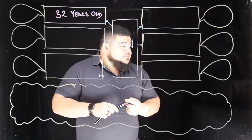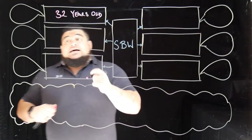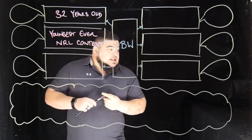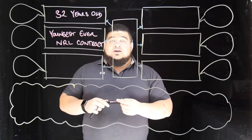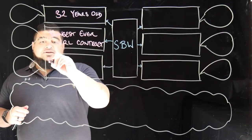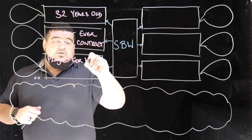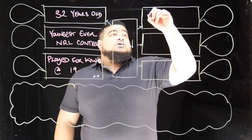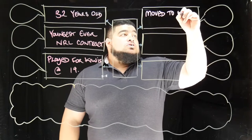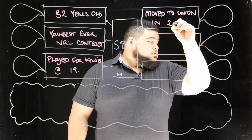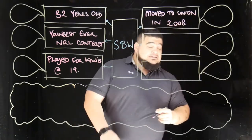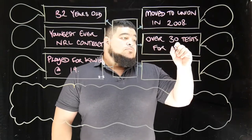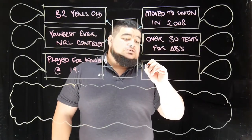Another characteristic is that he was the youngest ever player to get an NRL contract. He was also one of the youngest Kiwi internationals, playing for the Kiwis at 19. He moved to rugby union in 2008 when he played in France, has played over 30 tests for the All Blacks, and has owned quite a few heavyweight boxing titles.